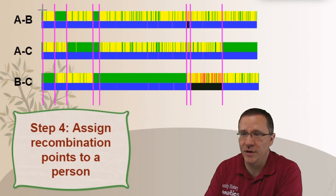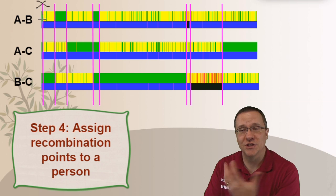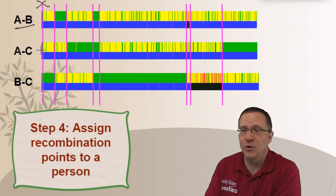So if we look at this first recombination point right here, okay, we can see that we go from green to yellow. So there's a change. So AB is that. And then it goes from green to yellow AC. Well that is a common A. And so we can assign that first line to person A.